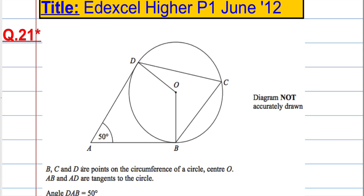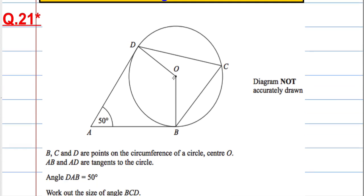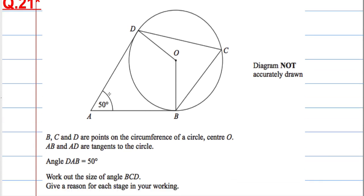We've got B, C and D are points on the circumference of a circle with centre O. So there's our three points B, C and D. The centre is there. Angle DAB, given here, is 50 degrees. And we're asked to work out angle BCD, so it's the angle between B and D at C.